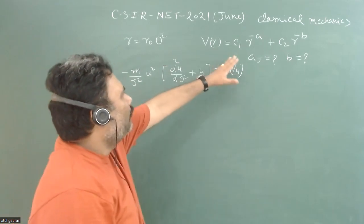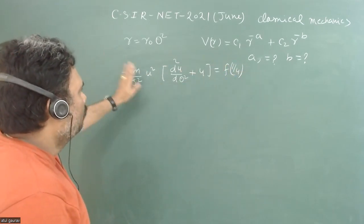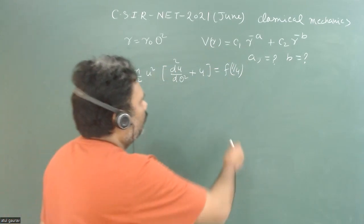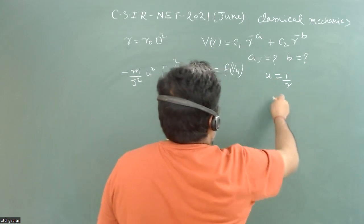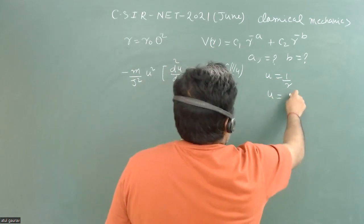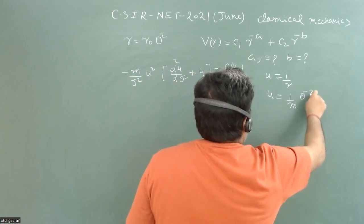Hence, there is some arbitrary constant c1 and c2, we can just neglect all this constant. But before that, let's go for what is u. u is nothing but one upon r.